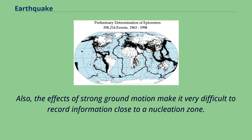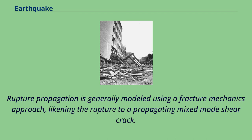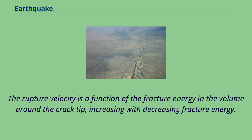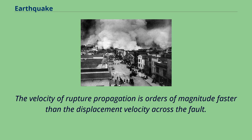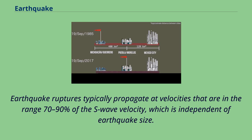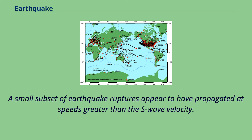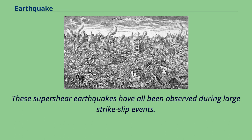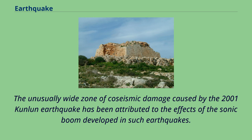The effects of strong ground motion make it very difficult to record information close to a nucleation zone. Rupture propagation is generally modeled using a fracture mechanics approach, likening the rupture to a propagating mixed-mode shear crack. The rupture velocity is a function of the fracture energy in the volume around the crack tip. Earthquake ruptures typically propagate at velocities in the range 70–90% of the S-wave velocity, independent of earthquake size. A small subset of earthquake ruptures appear to have propagated at speeds greater than the S-wave velocity — these super-shear earthquakes have all been observed during large strike-slip events. The unusually wide zone of co-seismic damage caused by the 2001 Kunlun earthquake has been attributed to the effects of the sonic boom developed in such earthquakes.